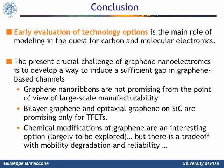To conclude, we believe that at this stage the early evaluation of technology options is the main role of modeling in the quest for carbon and molecular electronics. The present crucial, pass-or-fail challenge of graphene nanoelectronics is finding a way to induce a sufficient and reliable gap in graphene-based materials. Graphene nanoribbons are not promising given the large-scale manufacturability challenge they pose. Bilayer graphene and epitaxial graphene on silicon carbide are promising, but only for tunnel FETs. Chemically modified graphene is an option to be explored, but the effects on mobility and variability need to be carefully pondered. This concludes my talk — thank you very much, and I'm waiting for your questions.